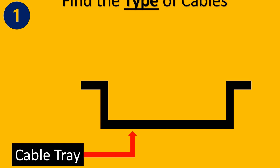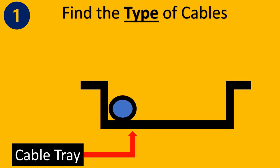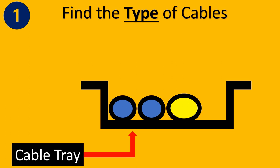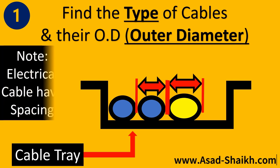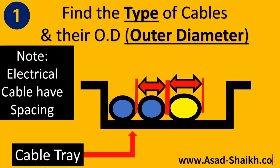Step one: imagine this is your cable tray. The first thing is to know the type of cables entering the cable tray — for example, analog input, digital input cables, etc. — and their outer diameter (OD). We need to find the OD from the catalogs. Also note that for instrument cable tray sizing versus electrical cable tray sizing, certain spacing needs to be kept because electrical cables carry very high current. For our purposes here, this is not applicable.